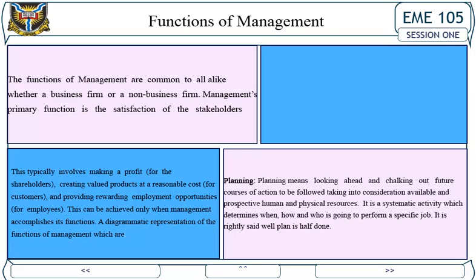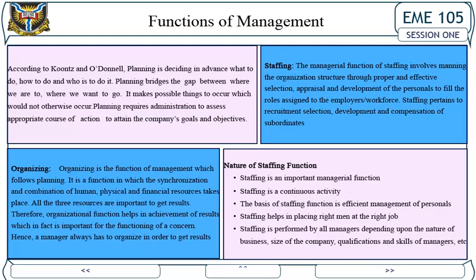Planning is one of the key functions. Planning means looking ahead and charting out future courses of action to be followed, taking into consideration available and prospective human and physical resources. It is a systematic activity which determines when, how, and who is going to perform a specific job. According to Koons and O'Donnell, planning is deciding in advance what to do, how to do it, and who is to do it. Planning bridges the gap between where we are and where we want to go, making possible things that would not otherwise occur.